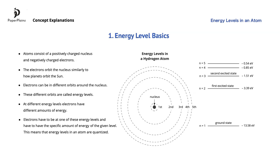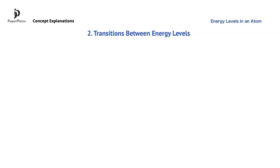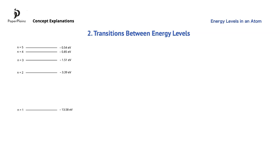Next, let's discuss how electrons transition between different energy levels. Let's return to the hydrogen atom energy level diagram. Electrons often transition between these energy levels — they can move from a lower to a higher or from a higher to a lower energy level. We use arrows to show these transitions. For example, an electron transition from the first to the third energy level, so from the ground state to the second excited state, can be shown like this.